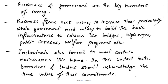In the ancient days, lending or investing was not so convenient because most of the transactions were of individual type. There were no banking organizations which could act as intermediators, or no credit instruments in the market. Today, there are many credit instruments and most people use them. Business and governments are the big borrowers. Business firms or a company seek money to increase their productivity, while government needs money to build basic infrastructure for citizens like bridges, highways, public services, and welfare programs. Even as an individual, we borrow money to meet certain necessities — maybe home loan, car loan, two-wheeler loan, etc.